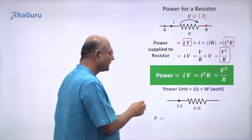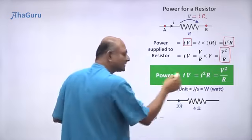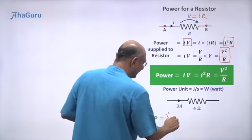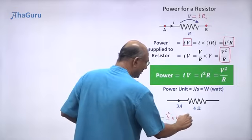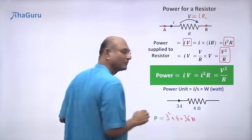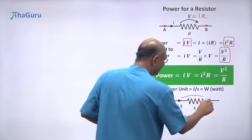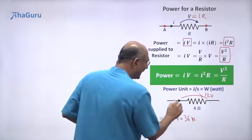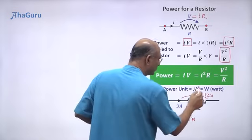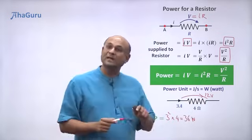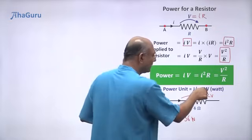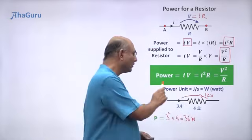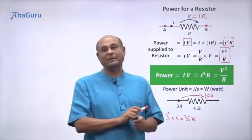Here I have 3 amperes going into a 4 ohm resistor. To calculate power I can use I²R: 3 squared times 4 = 9 times 4 = 36 watts. I can also calculate the potential drop: I times R = 3 times 4 = 12 volts. Using I times V: 3 times 12 = 36 watts. Using V²/R: 12 squared divided by 4 = 36 watts. You will get 36 watts in many different ways.